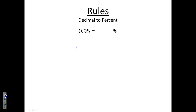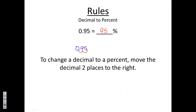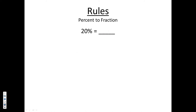The second rule: how do we change a decimal to a percent? Take 0.95 — we go backwards from what we just did. Move the decimal point two places to the right, giving us 95%, and add a percent sign. So to change a decimal to a percent, move the decimal two places to the right.